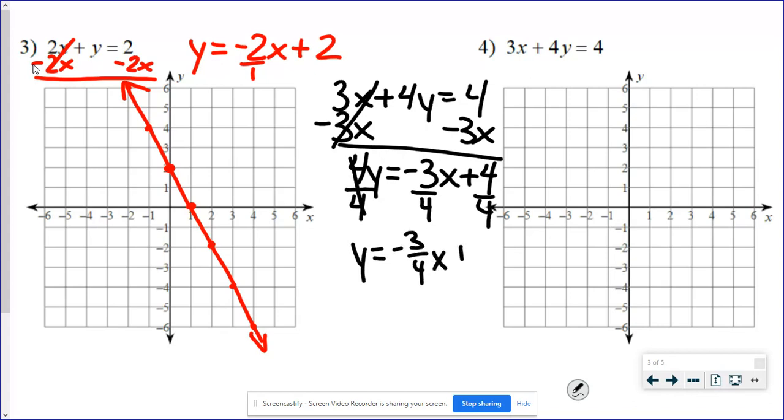So my y-intercept is 1. And my slope is a negative 3/4, which means down 3 and over 4. So I'm going to go negative. Or up 3 and left 4. And there's my line.